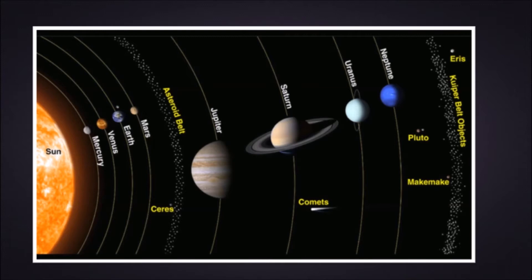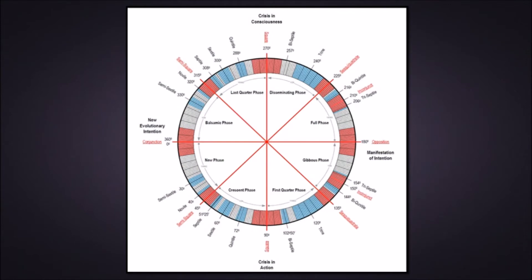You've identified that Neptune is the slowest moving planet and Jupiter is in relationship to it. Very simple — you get a little chart, courtesy of the Evolutionary Astrology Glossary e-book. As you can see on the chart, you've got new phase, crescent phase, first quarter phase, gibbous phase, and all these phases. Each phase represents an aspect of development.